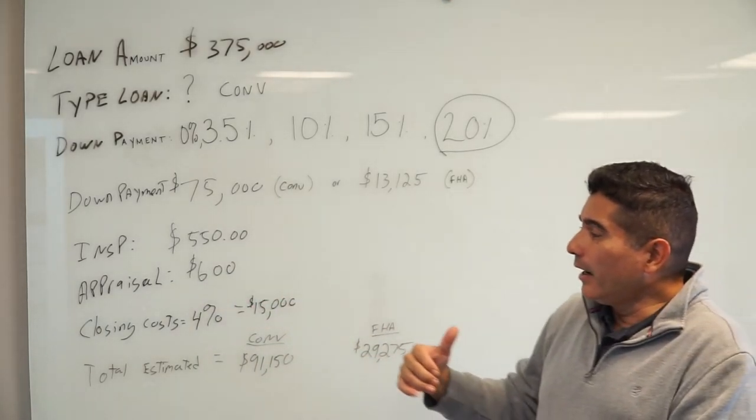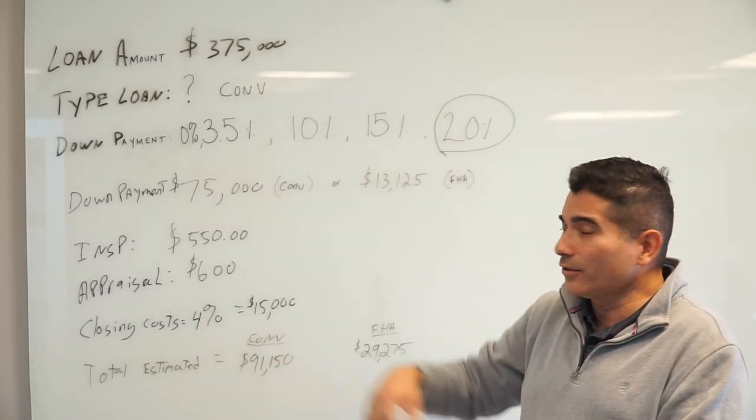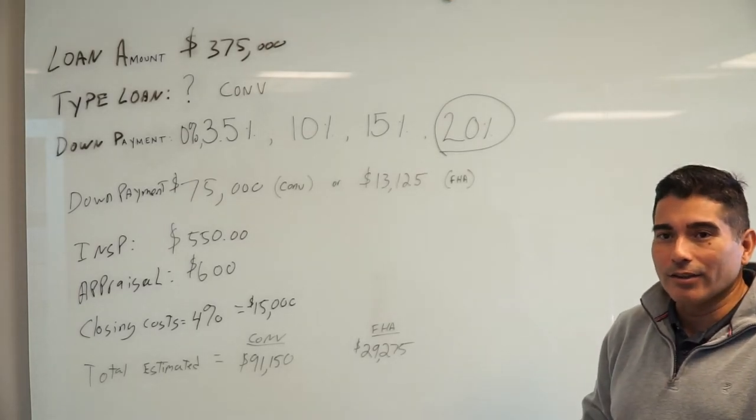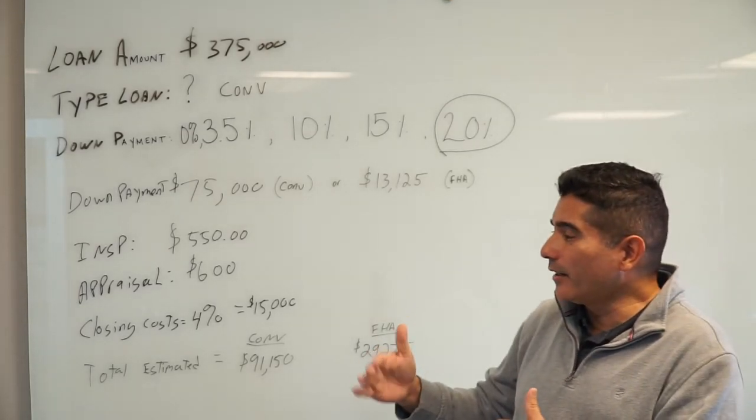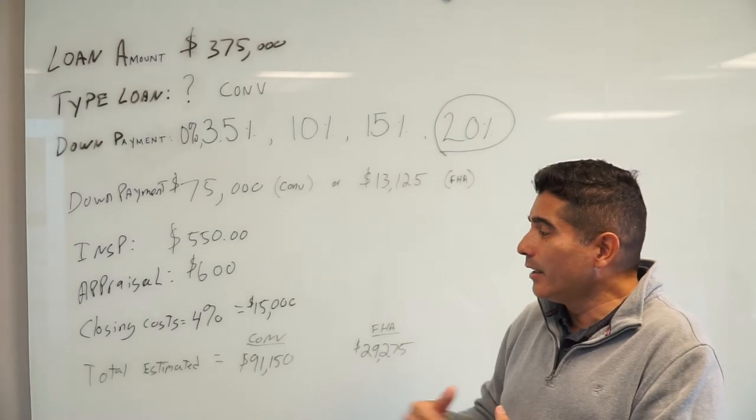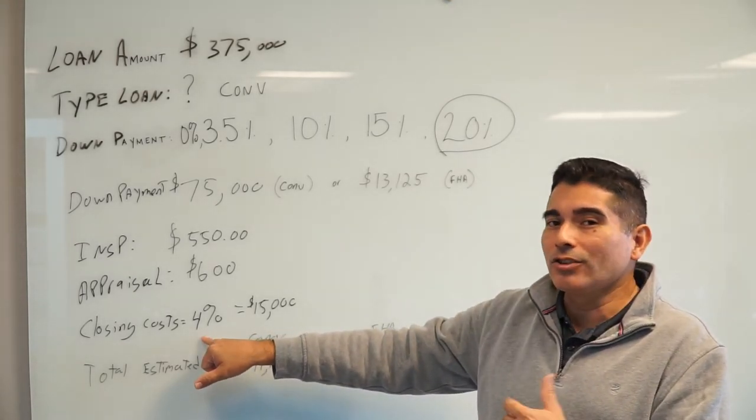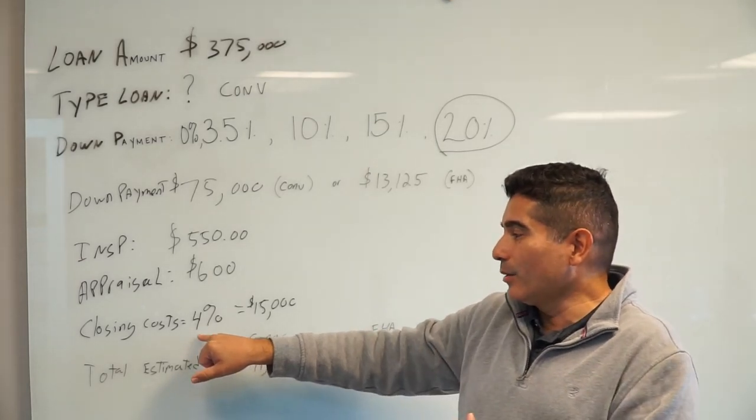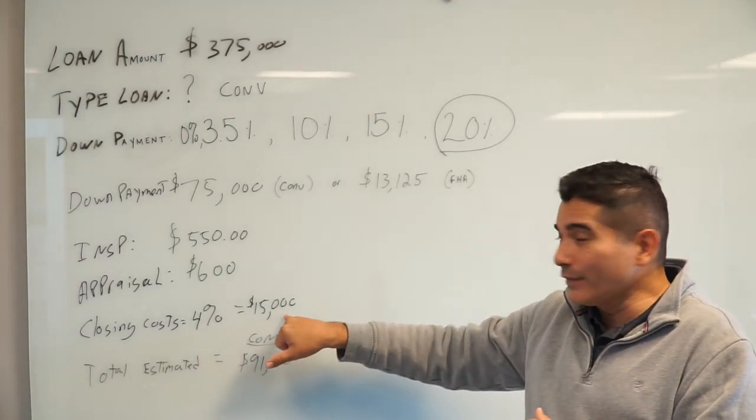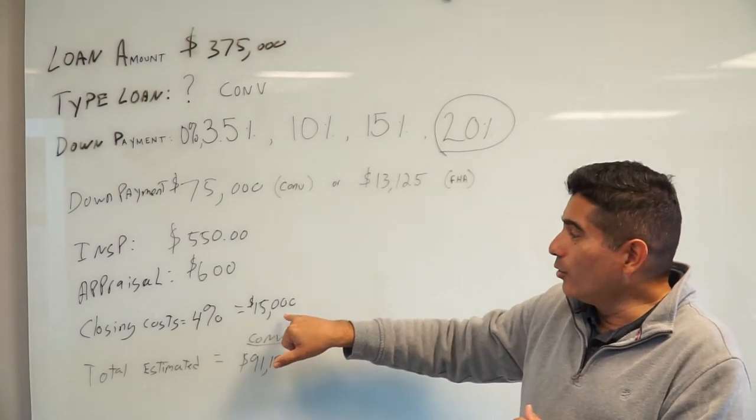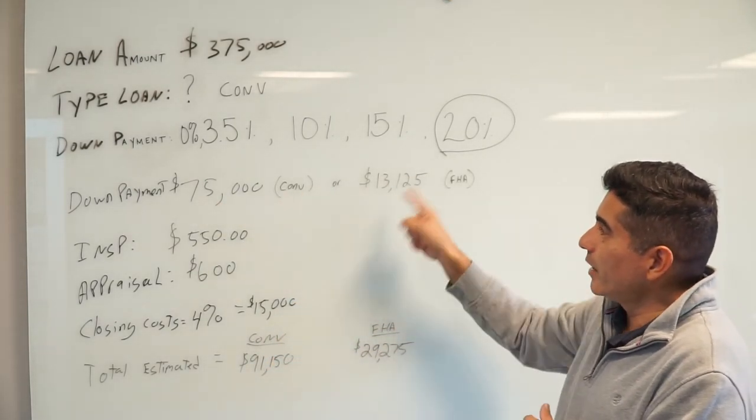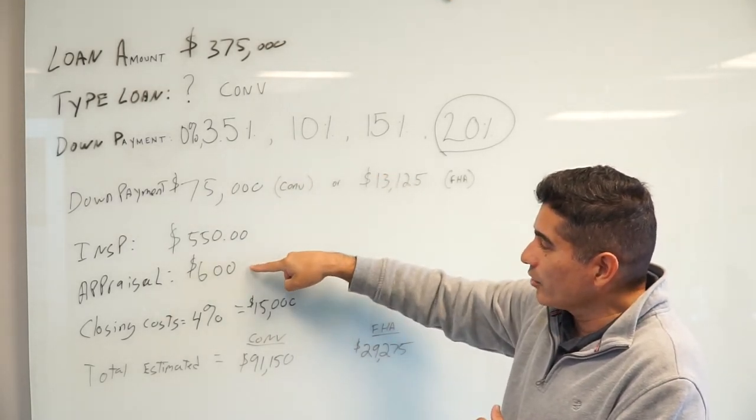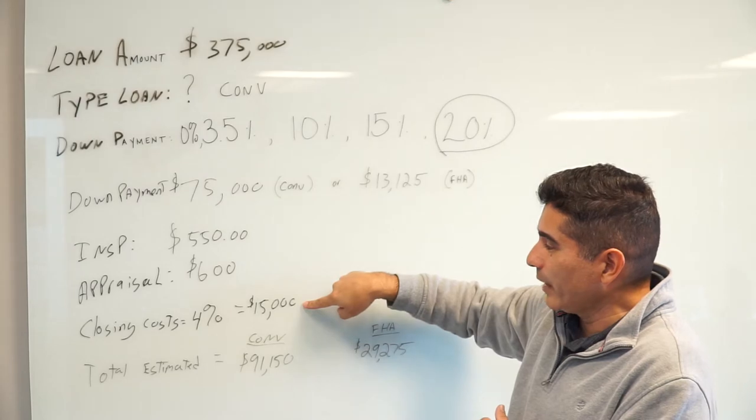Then there's closing costs. Closing costs are the cost to pay the taxes to transfer title, to pay the lender, to pay different things that are involved with this deal. Usually that's going to depend on the lender, but they should give you an estimate of how much it's going to be. In this particular case it was four percent or fifteen thousand dollars. If you notice, the down payment changes based on the loan that you're getting, but these costs are almost fixed based on the loan and based on the lender.